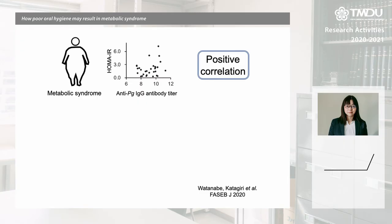In 2020, we reported two novel findings. We discovered that infection with Porphyromonas gingivalis, the bacterium causing periodontal disease, causes skeletal muscle metabolic dysfunction by altering the composition of the gut microbiome.